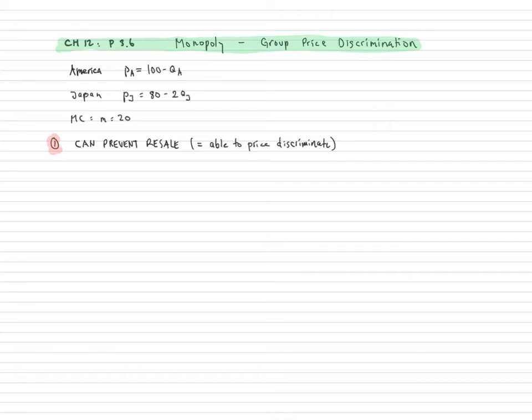Hello, I just want to solve problem 3.6 from chapter 12 very quickly. So here we have the question where we have a monopoly that sells its good in both America and Japan.